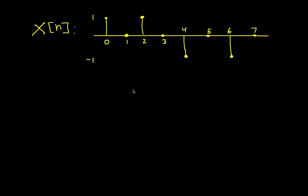On the screen we have a graph of one period of a discrete-time signal. We will assume that the period of the signal is 8, so at sample 8 it would start over: 1, 0, 1, 0, negative 1, 0, and so on. Our goal is to compute the discrete-time Fourier series coefficients for k going from 1 to 8.